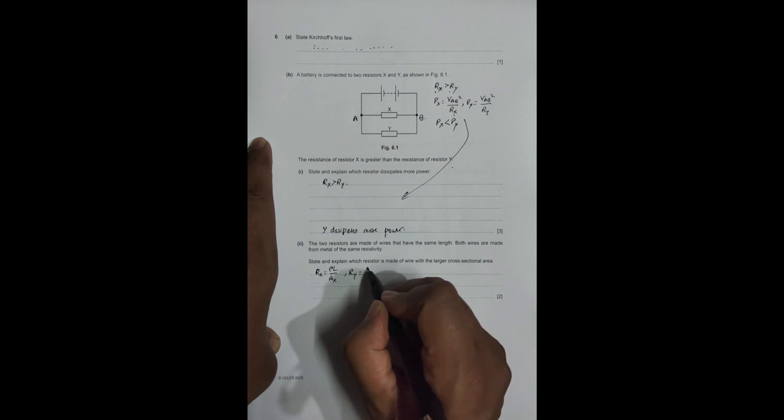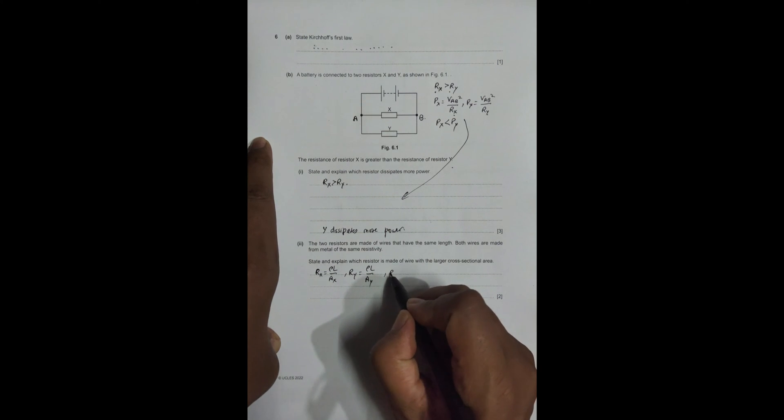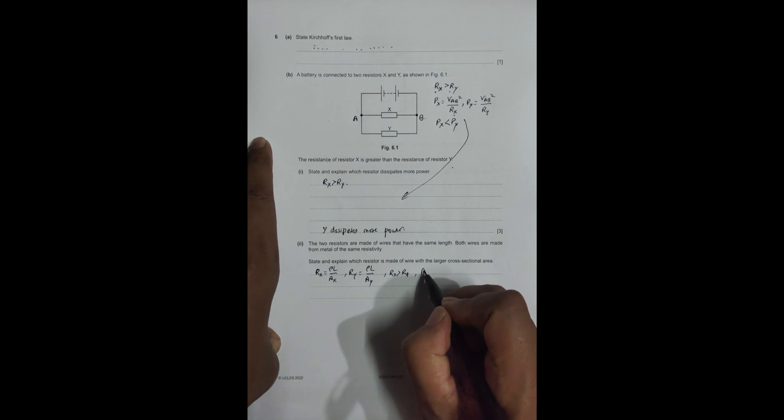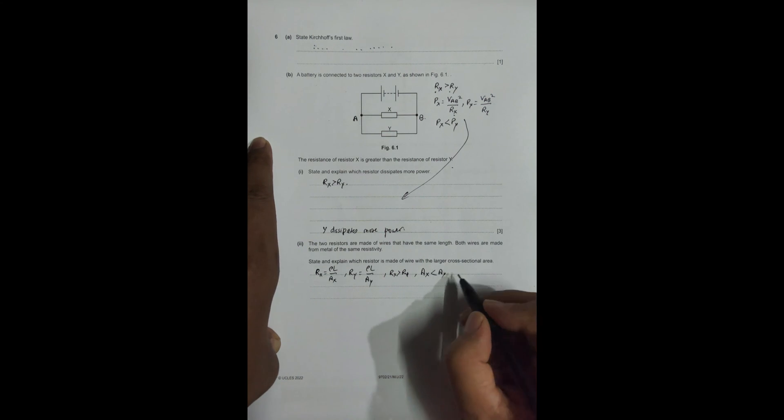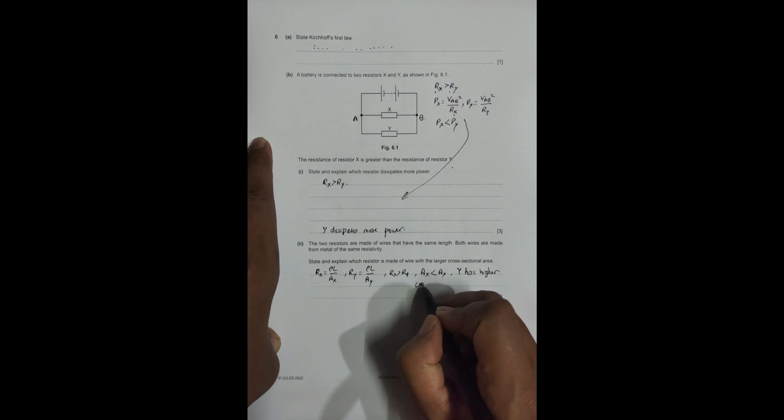...and RY = ρL/AY. ρ and L are same for both of them. Since RX > RY, I must have AX < AY. This means that Y has higher cross-sectional area.